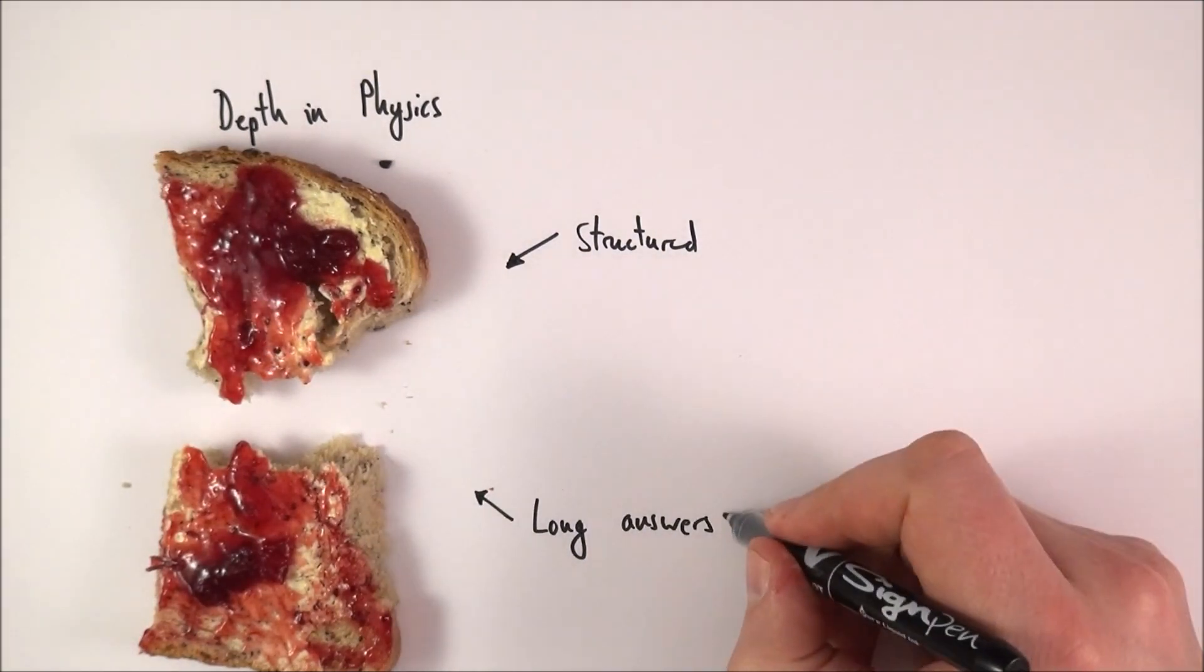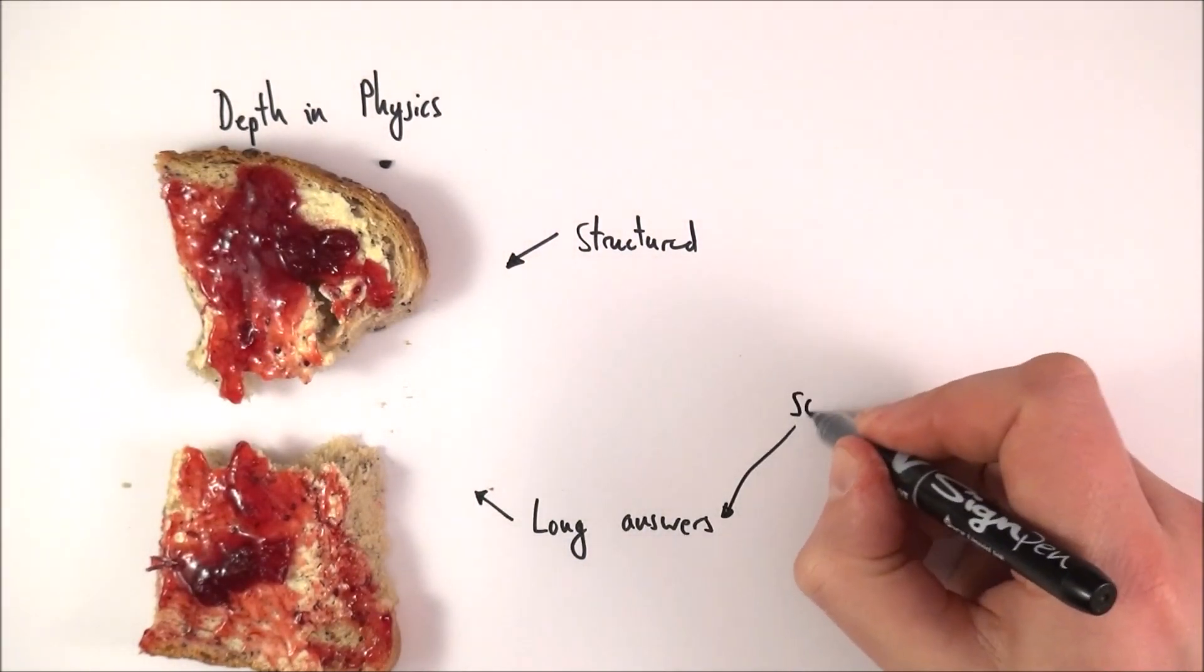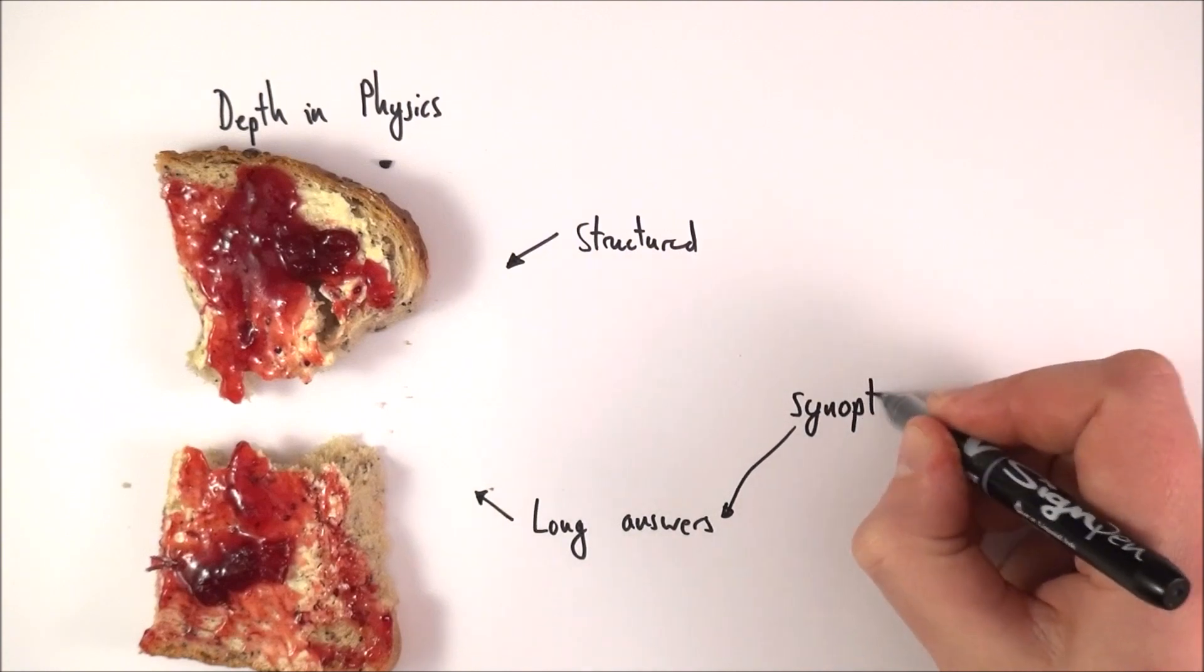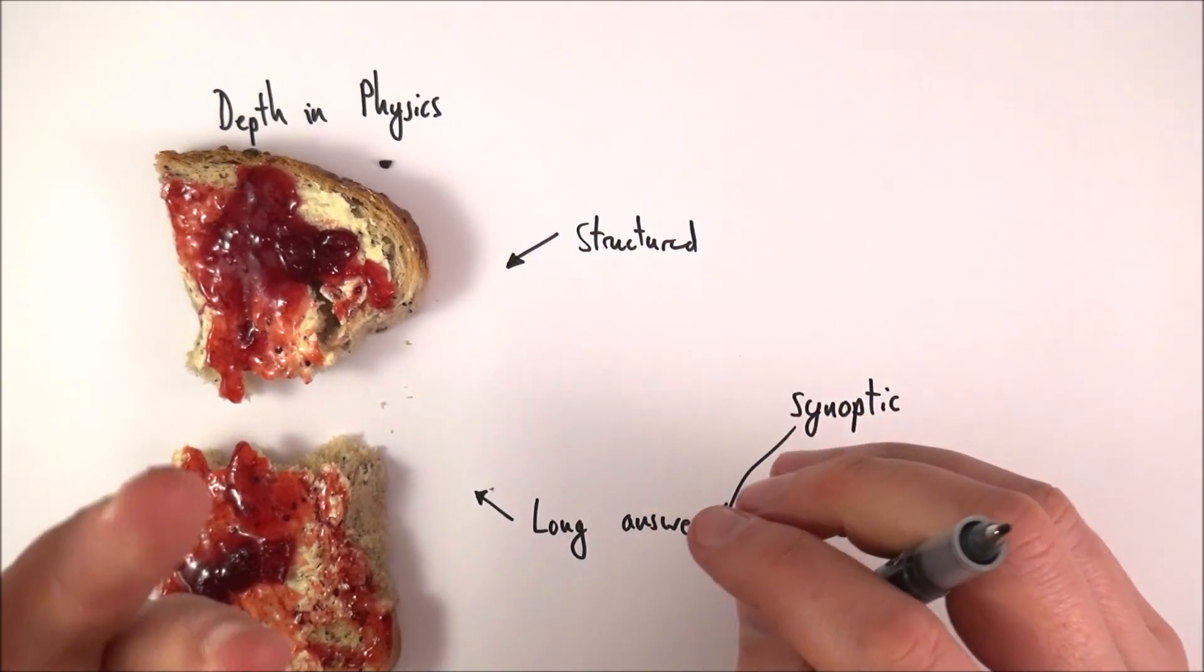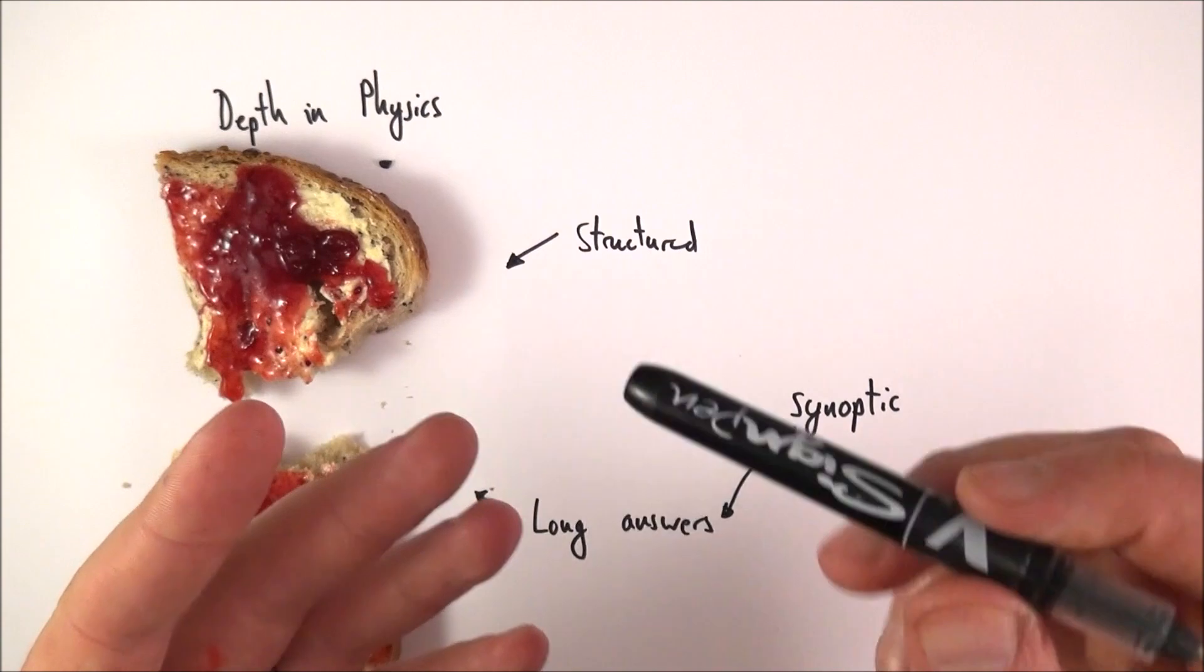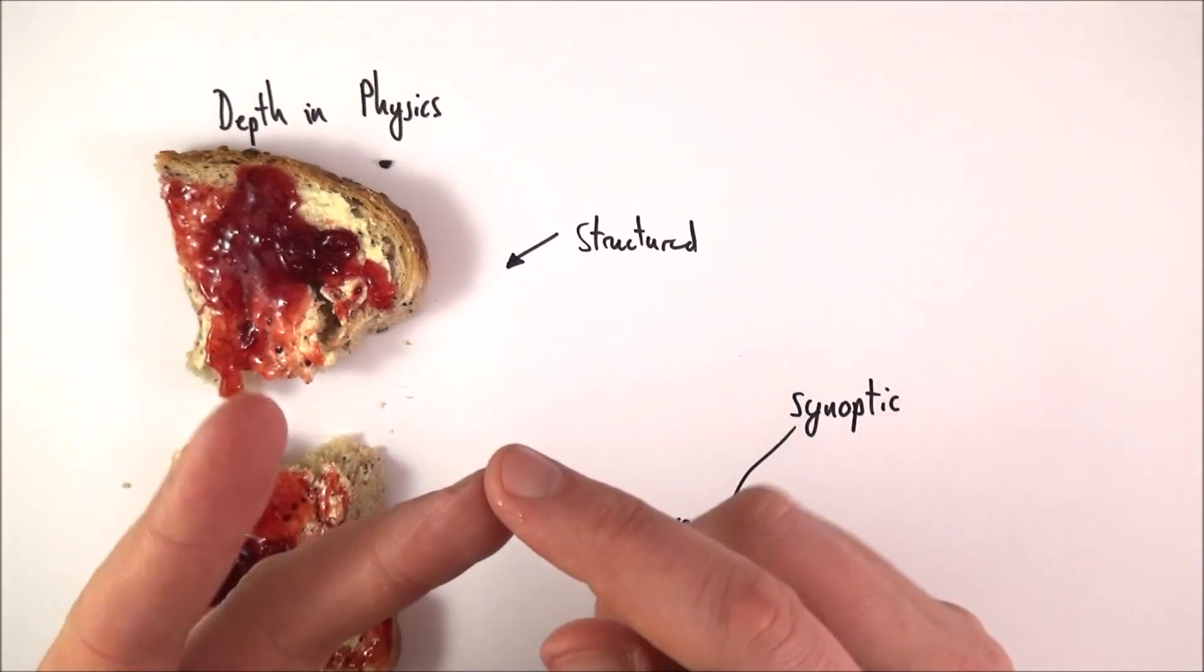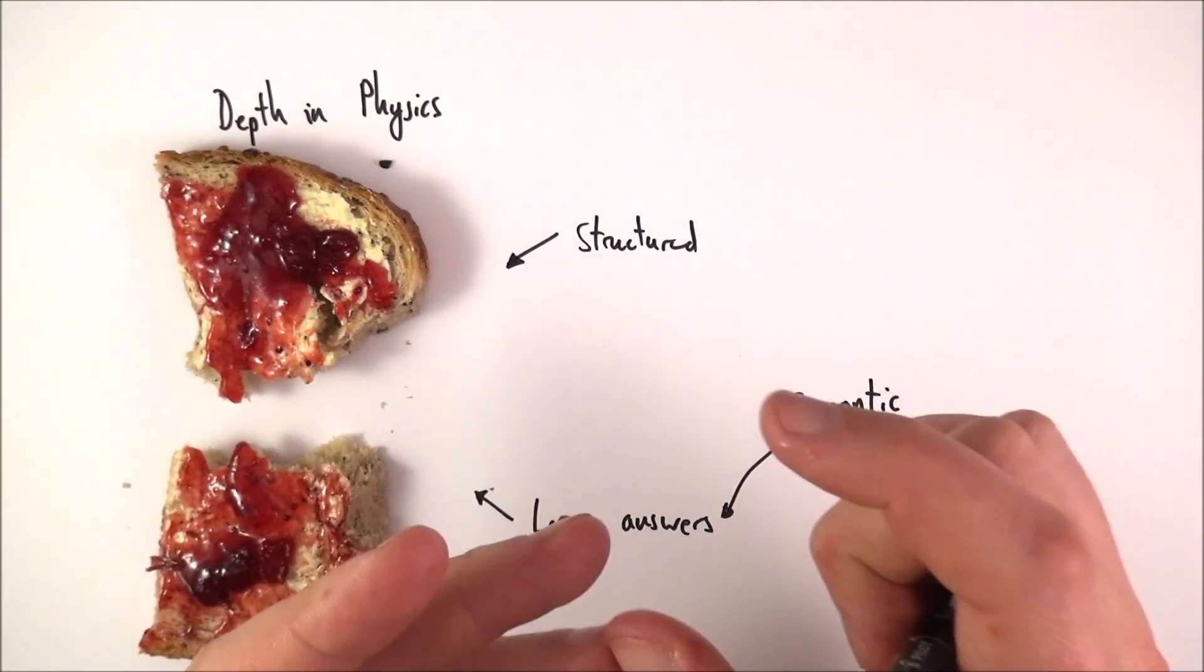Now these long answer questions, basically they are what we call synoptic. Now synoptic questions only used to be seen at the full A-level a couple of years ago, but this kind of mixes up all the parts of the course. So there might perhaps be a question to do with electricity and circuits which then moves on to waves and then has a bit about maybe some SUVAT equations within it.